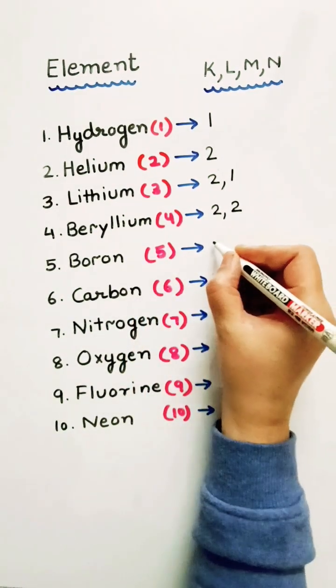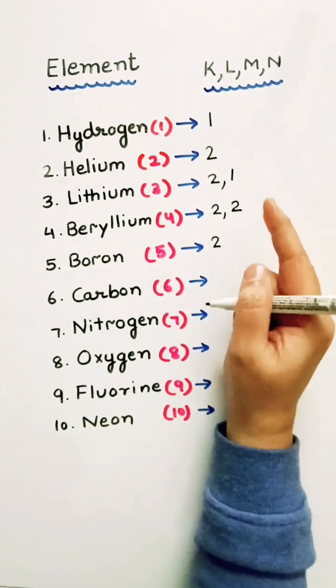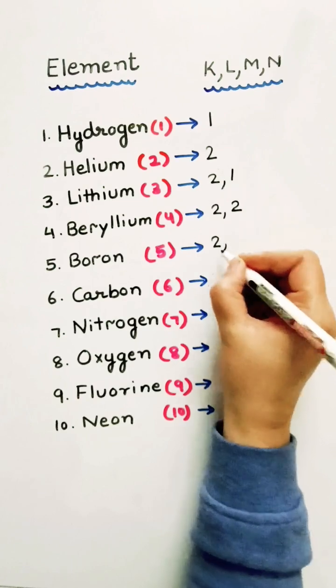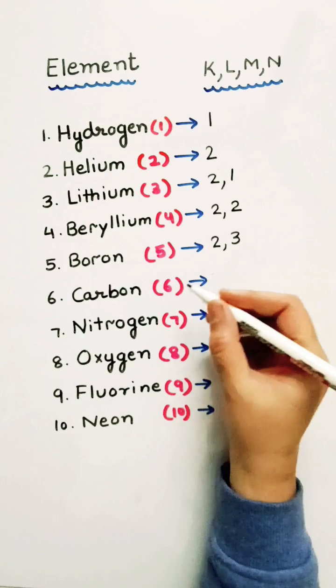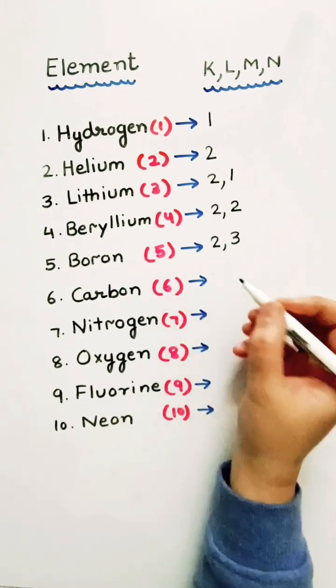Boron is 5. So, 2 in the K shell. How many electrons are left? Just 3 for the L shell.